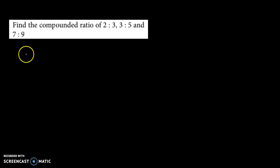So in order to find the compounded ratio, we basically multiply the numerators and the corresponding denominators.